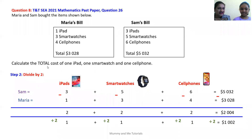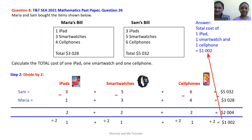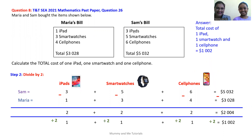The question asked us to find the total cost of one iPad, one smartwatch, and one cell phone. When we divided by two, we found that the cost of one iPad, plus one smartwatch, plus one cell phone equals $1,002. Did we answer the question? Yes. So the total cost of one iPad, one smartwatch, and one cell phone is $1,002. Great job. Thanks for watching, everyone. Bye!